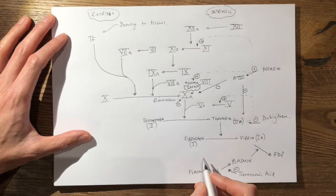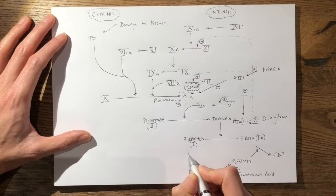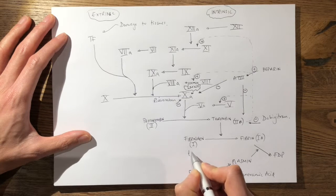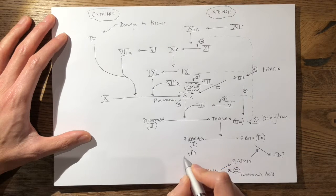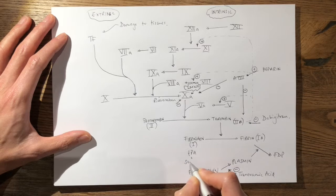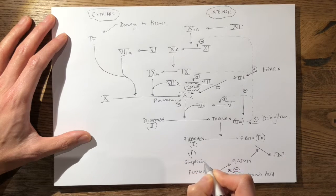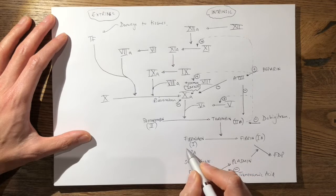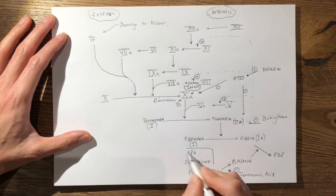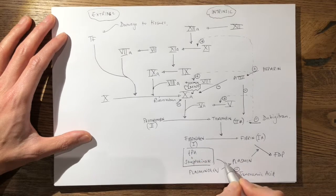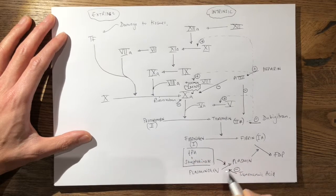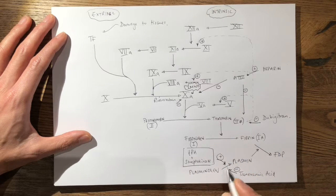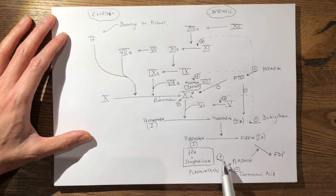Conversely, physicians thrombolyze people for massive PEs and strokes, and they often use TPA or streptokinase. These agents actually potentiate the conversion of plasminogen to plasmin — and that is how thrombolysis agents work. They work at that same plasminogen-to-plasmin step.